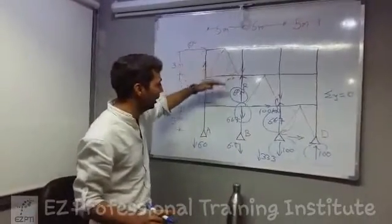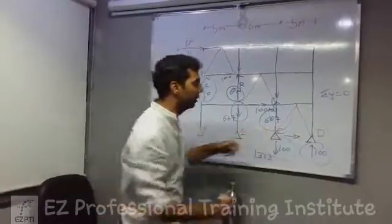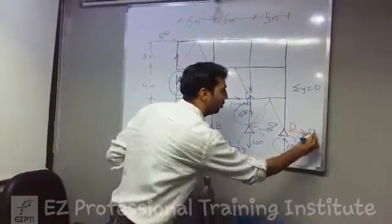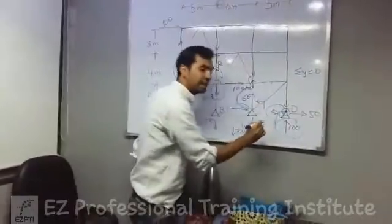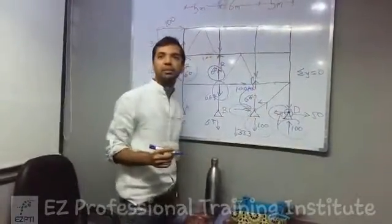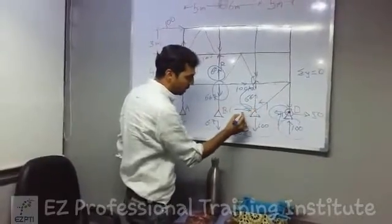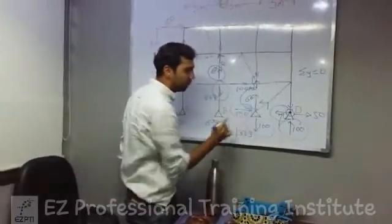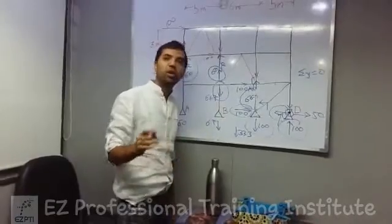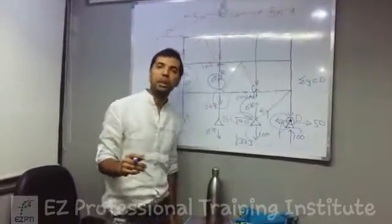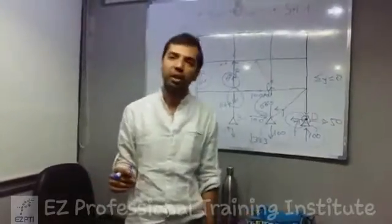And the horizontal load by transferring like this, finally it reaches up to here. So this will be divided into 2, so 50. This can exist when it is given a pin support. So in this case the whole load gets transferred here and the whole value will be getting here. So that's all for today's learning. Thank you very much. This is Satish Jethwani from Easy Professional Training Institute. Thank you.